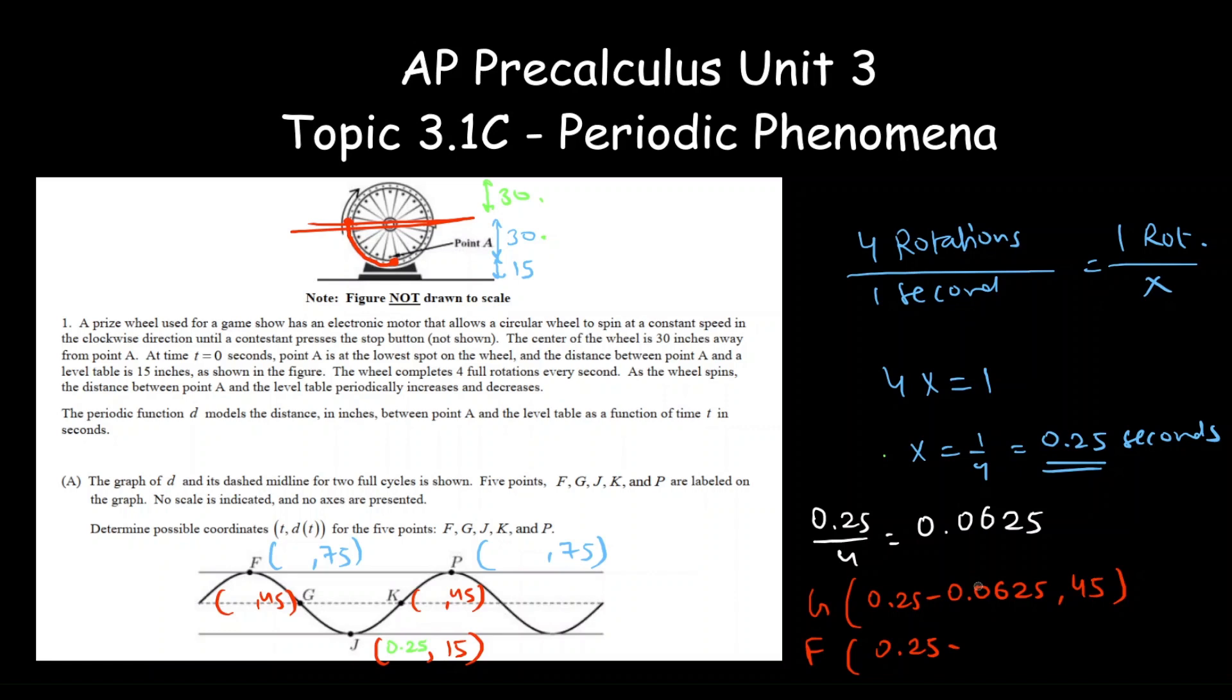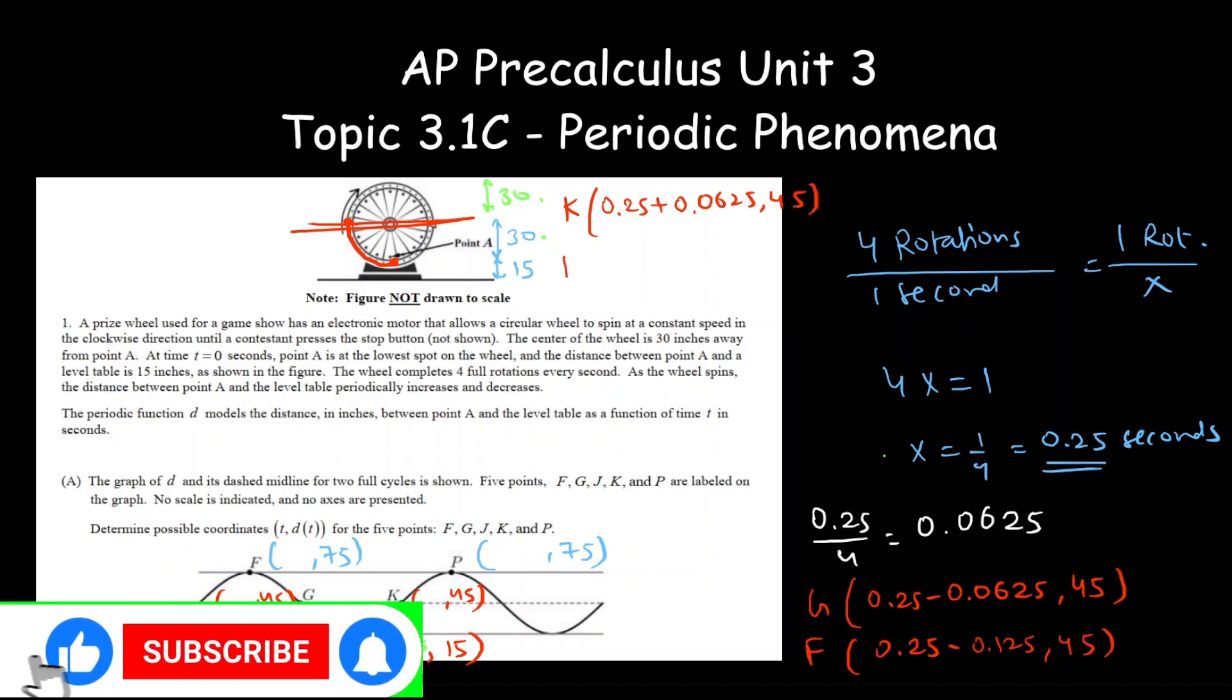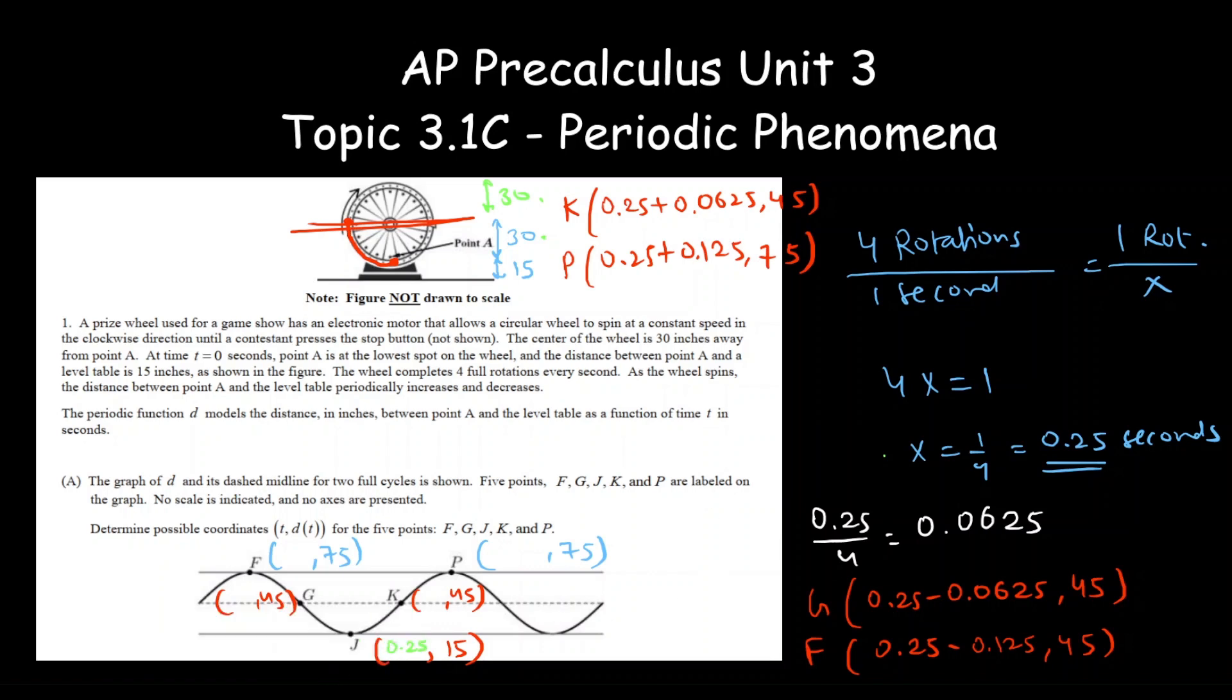And likewise, the coordinates of K will be 0.25 plus 0.0625 comma 45, and for P it will be 0.25 plus 0.125 comma 75. So these will be the coordinates of the five points.